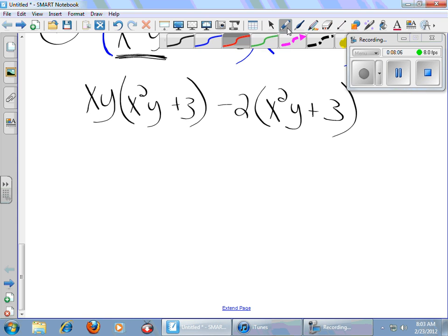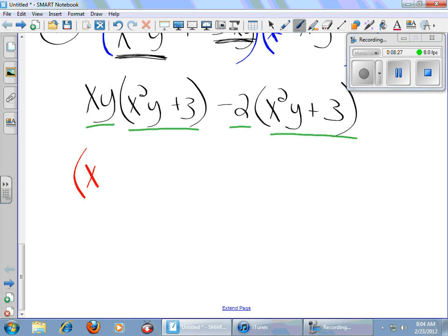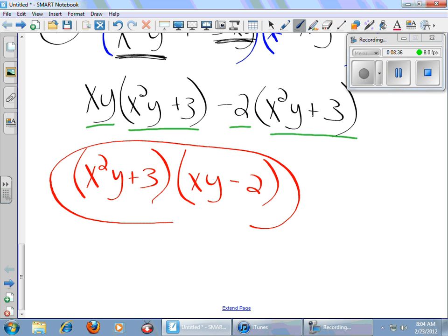Now, I look at my two groups. I've got x, y times the quantity of x squared y plus 3. I have negative 2 times the quantity of x squared y plus 3. Did I repeat myself? You bet your boots. I sure did. So, I am going to bring out the term that is common. I am going to pull him out. I'll be left with an x, y minus a 2. And that is factored completely. That will not go any further.